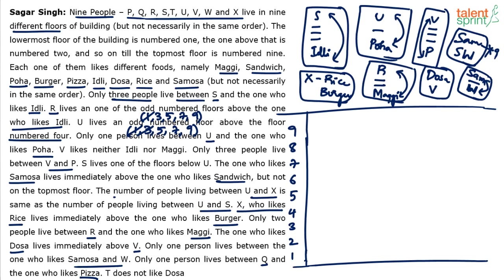The 9th floor can be ruled out for U. The statement says number of people between U and X equals number of people between U and S — this is only possible if U is between S and X. If U were on the 9th floor, both S and X would be below U, and for equal distances they'd have to share the same floor, which is not allowed. So the 9th floor is eliminated for U, leaving only two possibilities: 5th or 7th floor.